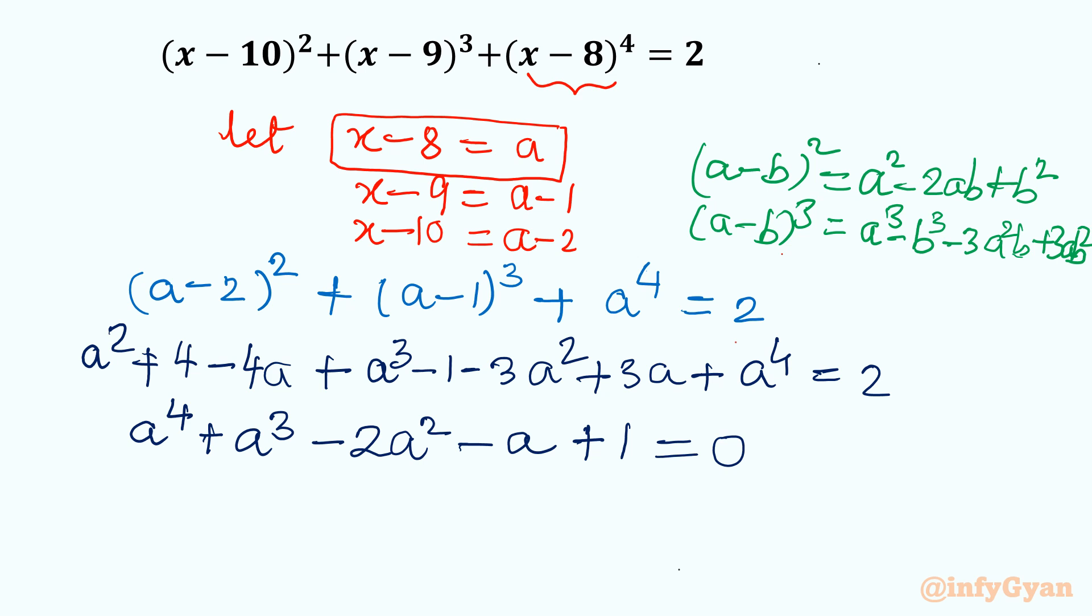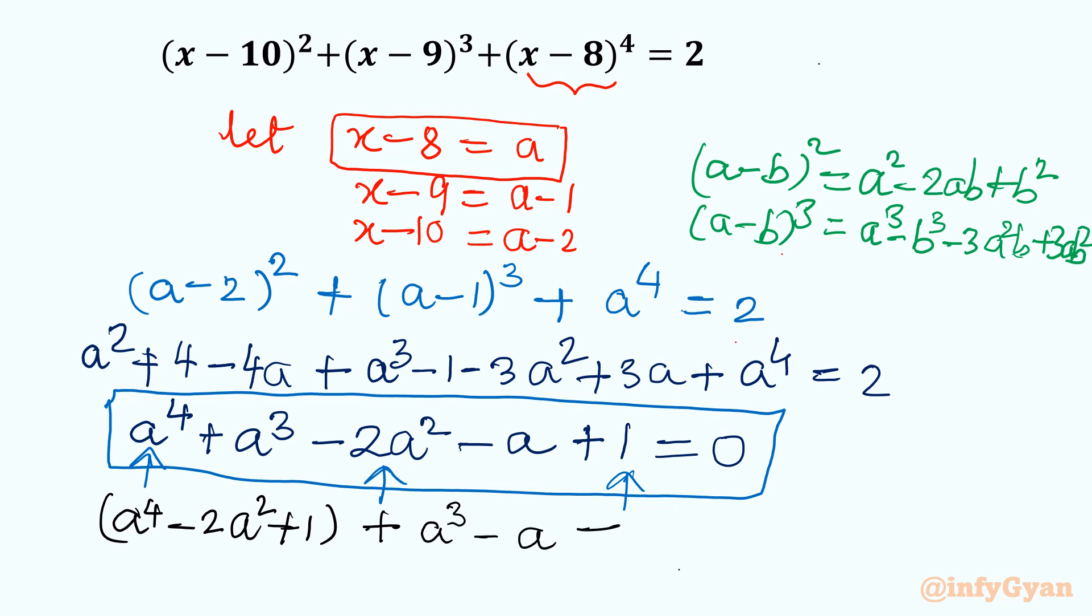Now you can see easily this equation is quartic and little more simplified version. Now we can solve this equation. How? I can consider this term, this term and this term in one basket, in one bracket, and the remaining two in the other bracket. So I will write: a⁴ - 2a² + 1, plus a³ - a. Right hand side is 0.